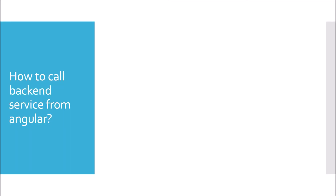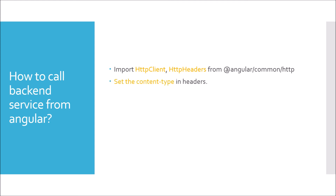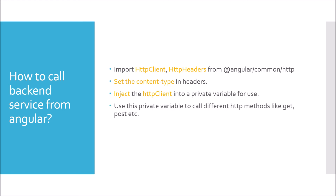Next question: how do you call a backend service from Angular? First, import HttpClient and HttpHeaders. Once imported, set the content type, then inject HttpClient into a private variable via the constructor. Use that private variable to call HTTP methods like GET or POST, and then subscribe to the method to receive the response. Angular uses the RxJS library — covered in a previous video on reactive programming — which provides the subscribe method.